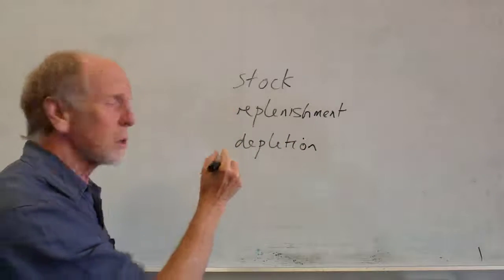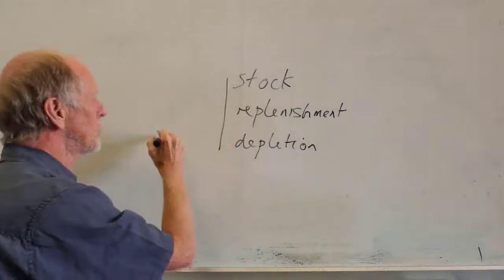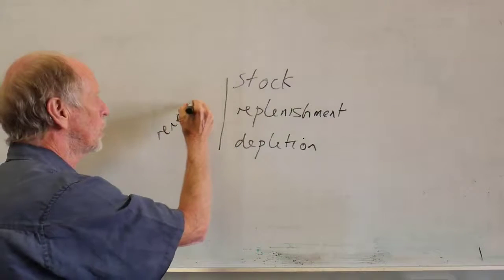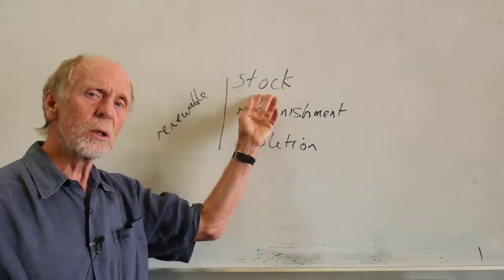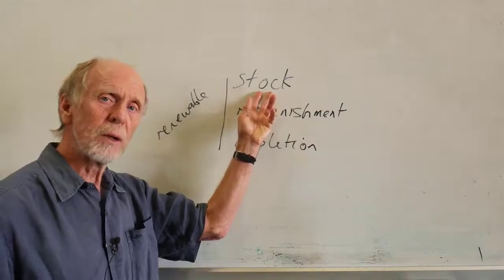If all of these are in balance, we've got something of a renewable resource. So, our resource, the stock, is, for example, the number of bison around.